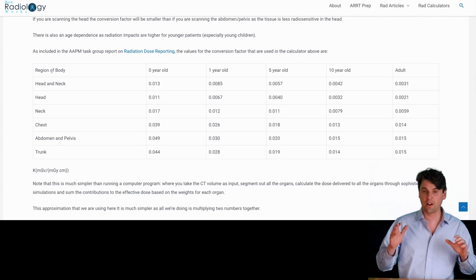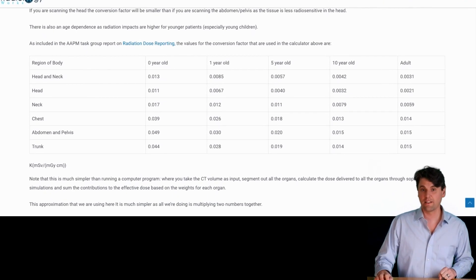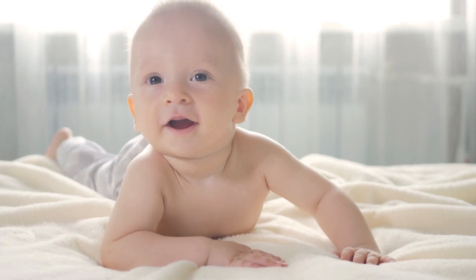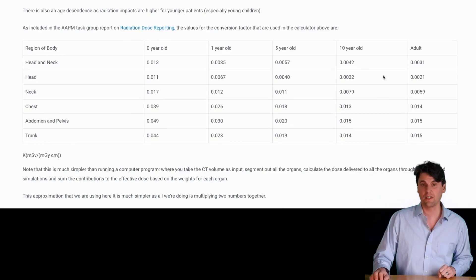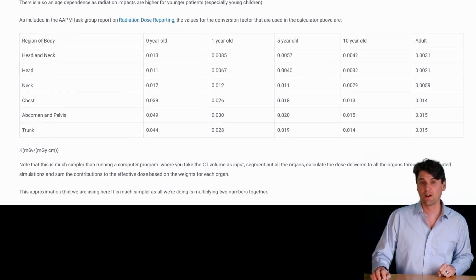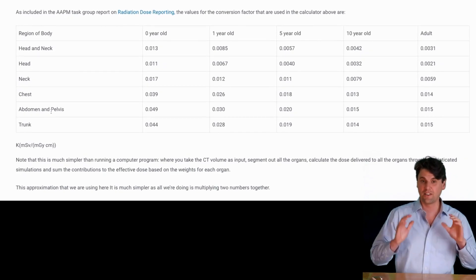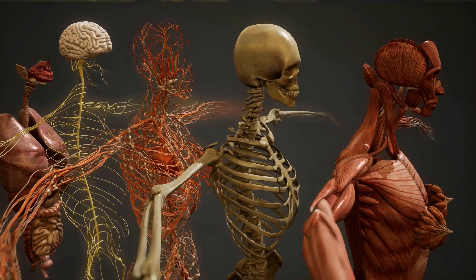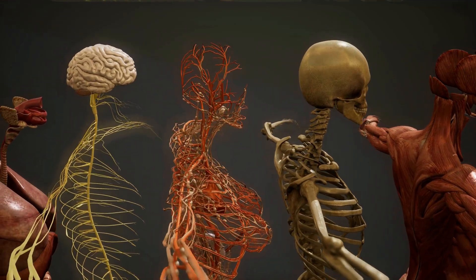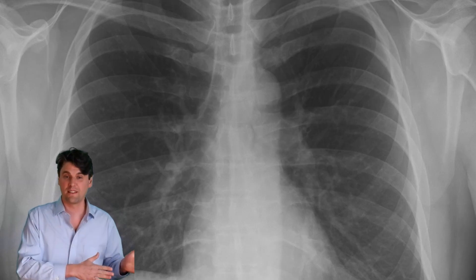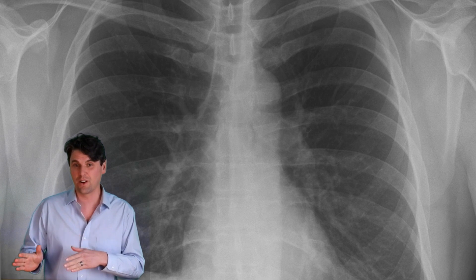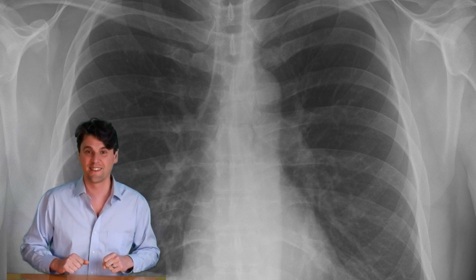These are the values for the weighting factor. They include the different ages from young all the way to adult in this direction here. And in this direction here, we're looking at the different anatomies of interest, which are typically scanned in a CT scanner. These are the values in the calculator if we want to go from the DLP to the millisieverts or to the effective dose.